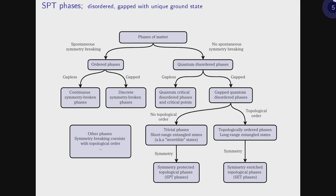Let me say a few words about symmetry-protected topological phases. The obvious example is the topological insulator. By SPT phase I mean a phase which is fully gapped and, more importantly, the ground state is unique. If you draw a tree diagram of phases of matter, we are interested in phases which cannot be detected by an order parameter, so we need some sort of topological invariant to characterize them.